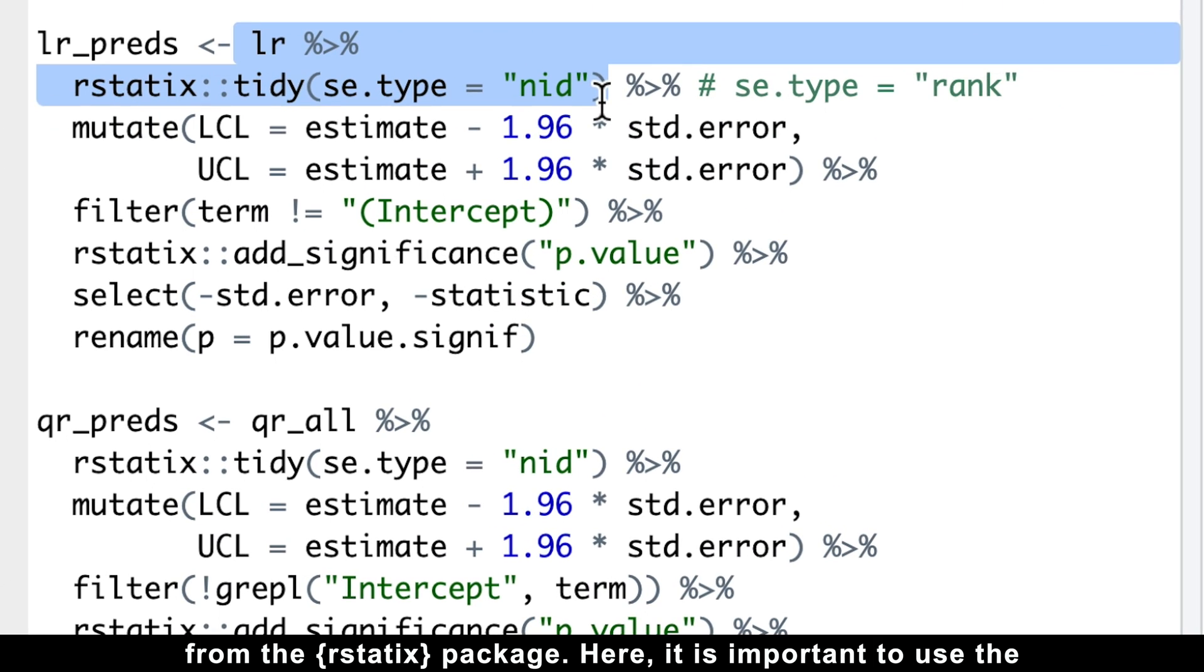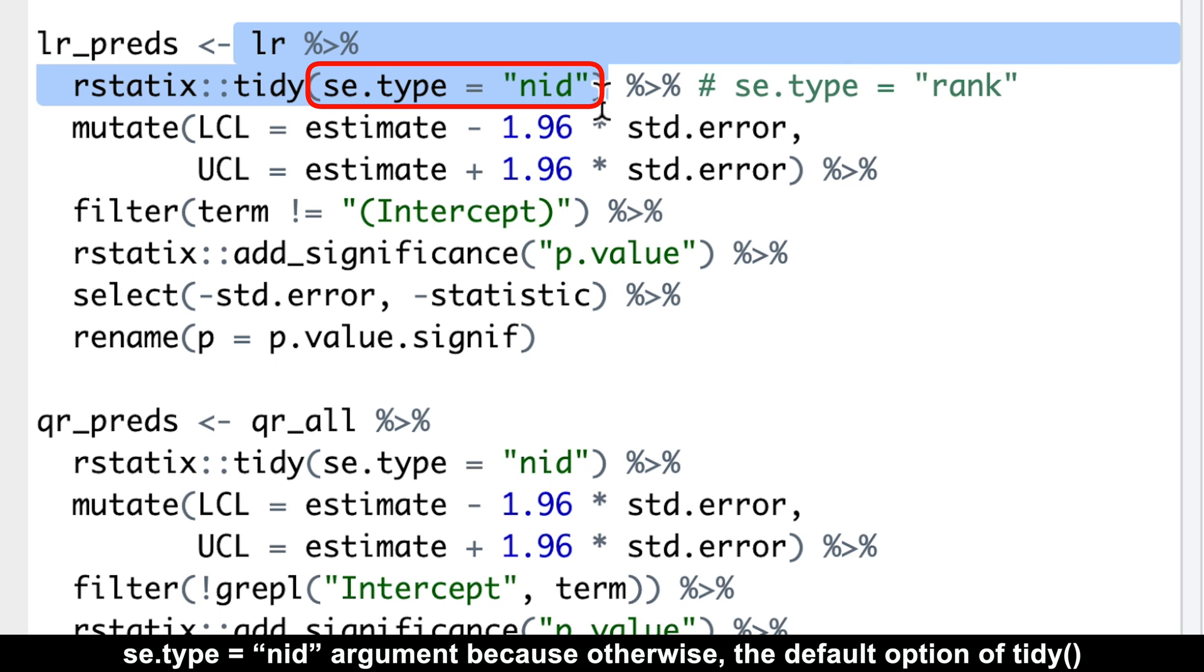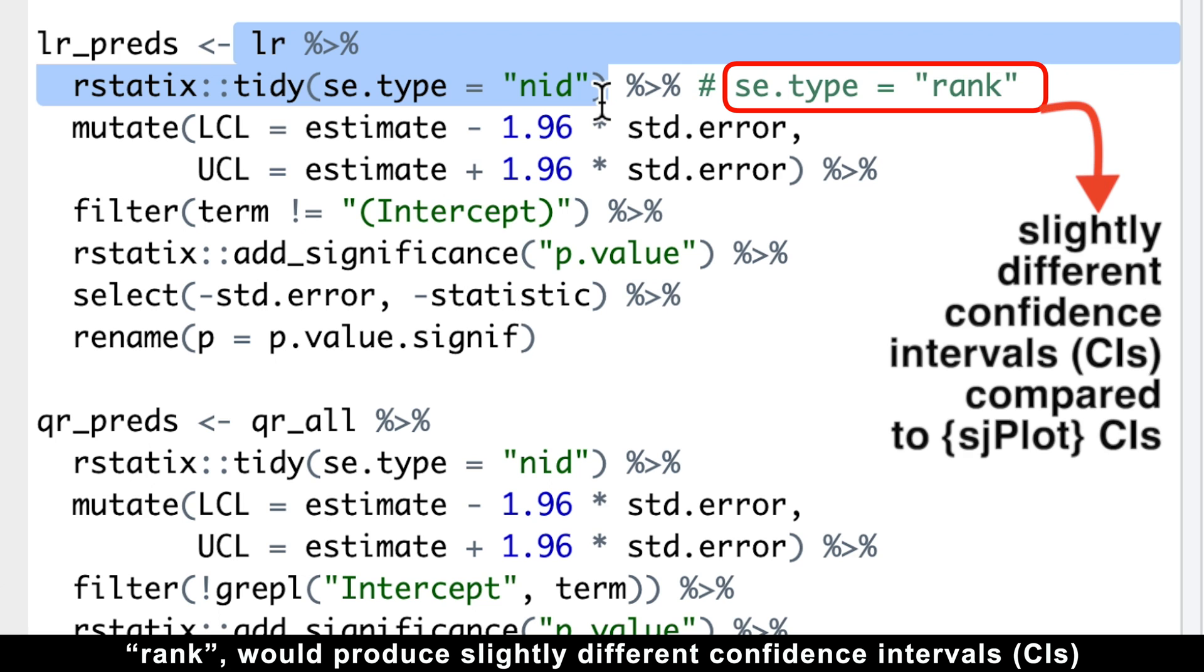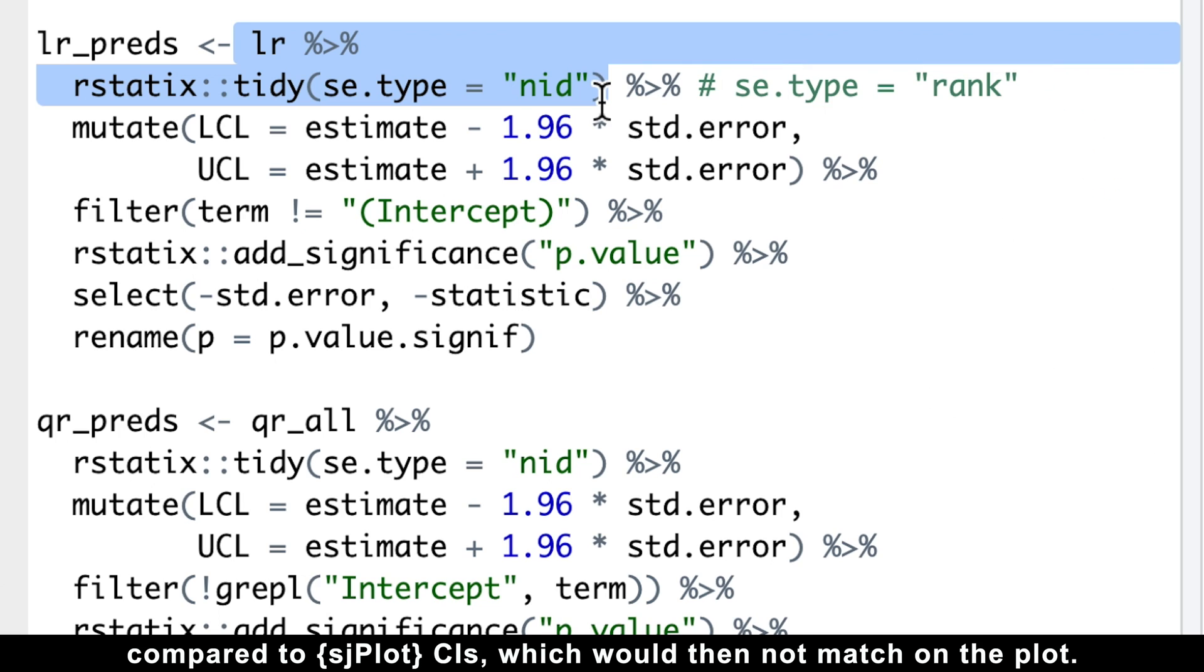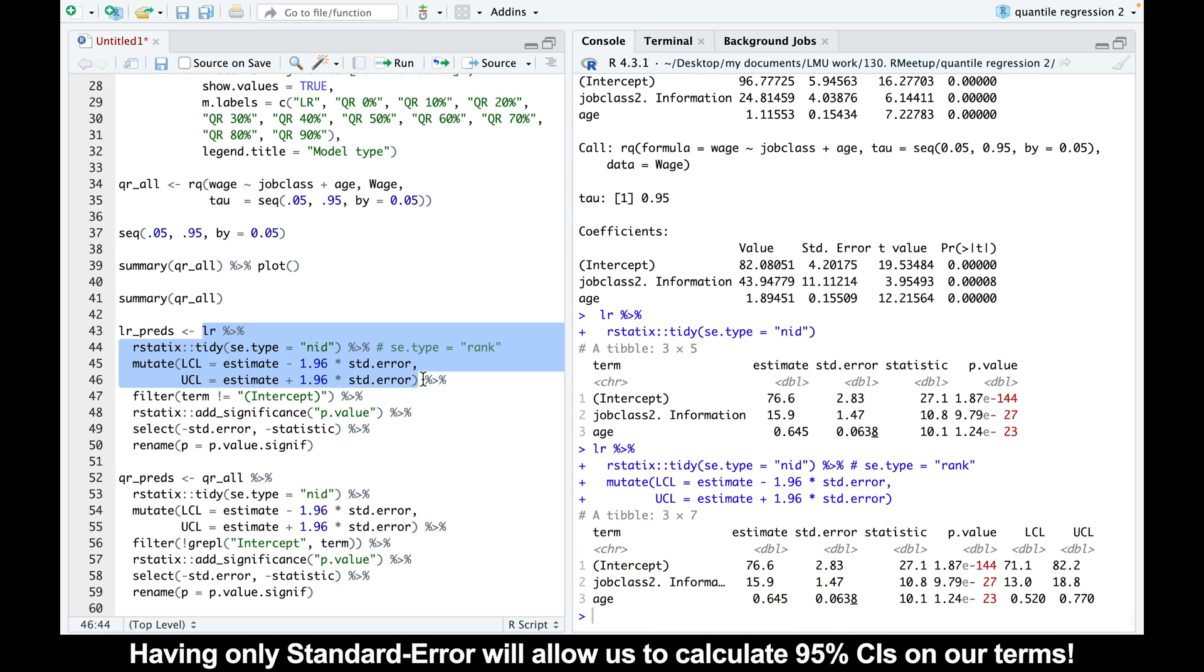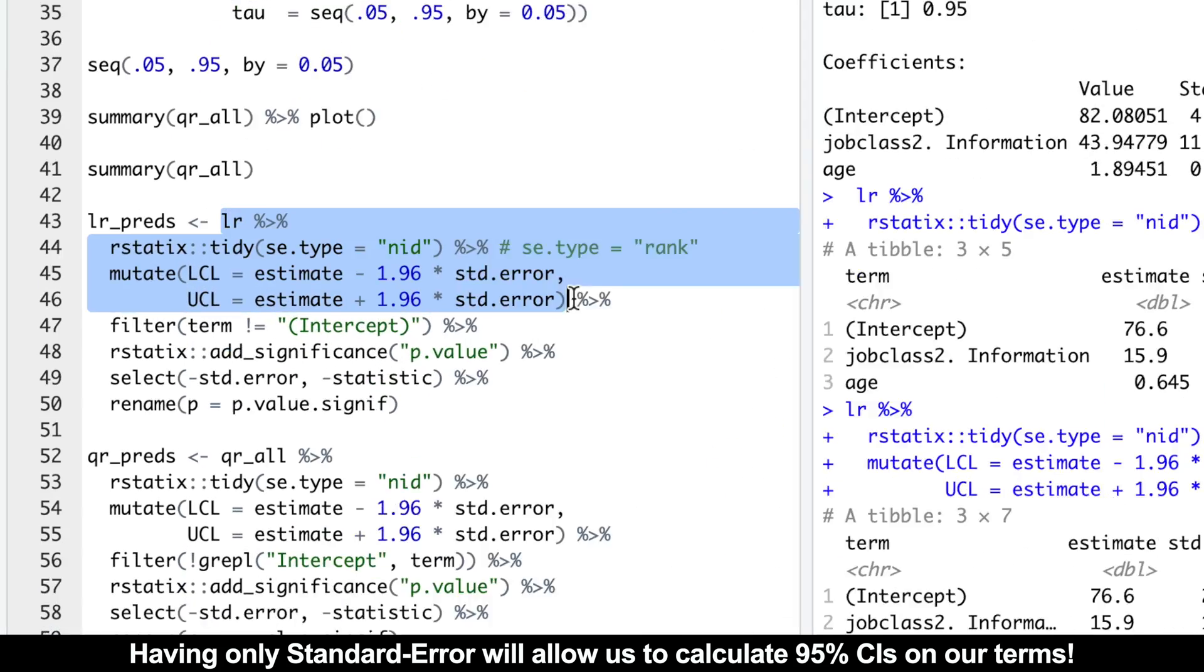Here, it is important to use the se.type nid argument because otherwise the default option of tidy, rank, would produce slightly different confidence intervals compared to sjplot confidence intervals, which would then not match on the plot. Having only standard error will allow us to calculate 95% confidence intervals on our terms.